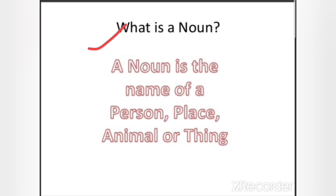You all know this definition — a noun is the name of a person, place, animal, or thing. So what does this mean? For example, 'boy' — boy is also a person, so 'boy' is a noun. And if that person has a specific name, like 'David,' then 'David' is also a noun.